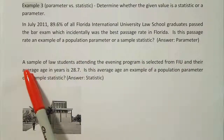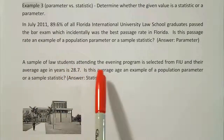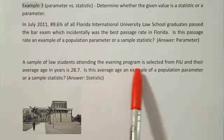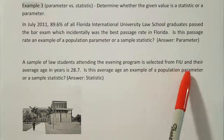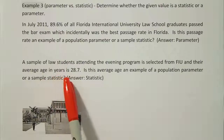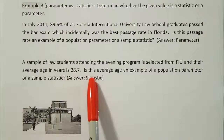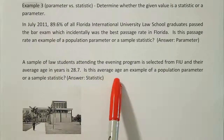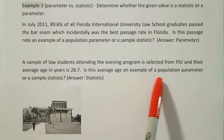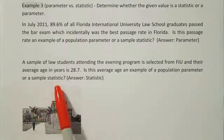For the next example, a sample of law students attending the evening program is selected from FIU and their average age in years is 28.7. Is this average age an example of a population parameter or a sample statistic?